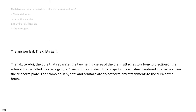The answer is D, the crista galli. The falx cerebri, the dura that separates the two hemispheres of the brain, attaches to a bony projection of the ethmoid bone called the crista galli, or crest of the rooster. This projection is a distinct landmark that arises from the cribriform plate. The ethmoidal labyrinth and orbital plate do not form any attachments to the dura of the brain.